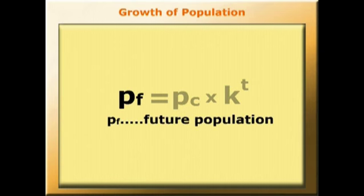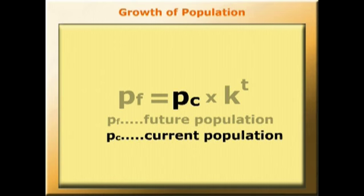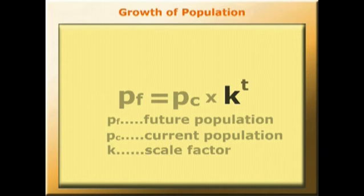The country's future population is the current population multiplied by k to the t, where k is the scale factor and t is the time period, in our case the number of years.